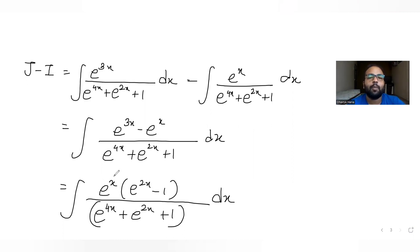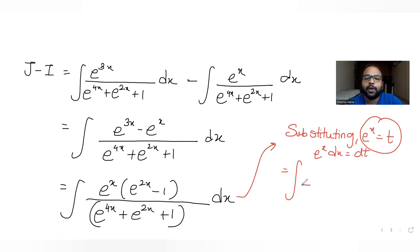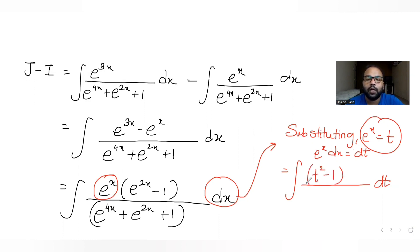Since we have e raised to x common in the numerator, we can use substitution. Substituting e raised to x as t, e raised to x dx becomes dt. So e raised to 2x becomes t squared, and the numerator becomes t squared minus 1. The denominator e raised to 4x plus e raised to 2x plus 1 becomes t raised to 4 plus t squared plus 1.